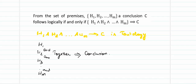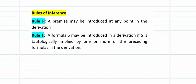Whether these hypotheses can lead us to a valid conclusion — that is what theory of inference is all about. We have two rules of inference. One is referred to as Rule P and the other as Rule T. Rule P says that a premise may be introduced at any point of time in the derivation. You may use any of the clues H1, H2 up to Hm, and they do not have to be introduced in an orderly manner.